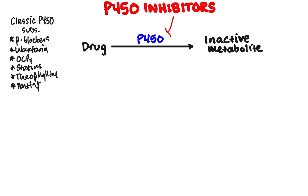An inhibitor would block the effect of the P450 enzyme, and because the P450 enzyme is responsible primarily for inactivating drugs, if you inhibit something that inactivates a drug, the drug level is going to go up. So what we're talking about here is a patient who is on one of these classic P450 substrates — and there are a lot, but I just put some of the more commonly tested ones. They're on one of those drugs, then they get started on one of these P450 inhibitors, and now they're presenting with some sort of syndrome where the original substrate drug is too high — at levels that are too high because we've blocked the metabolism of that drug.